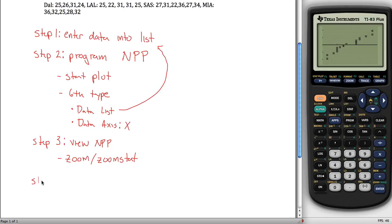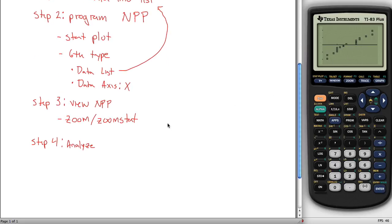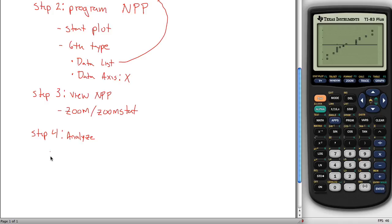Step four is to analyze. The way you analyze is there's kind of two different cases. Case one is if you don't have what are called bands, which is in the case of a TI-83 Plus. If your normal probability plot just looks like this, there's no bands, and I'll tell you what bands are in just a minute.